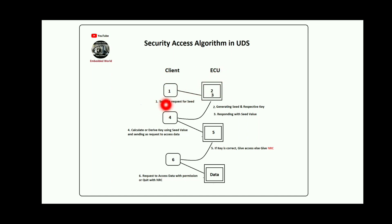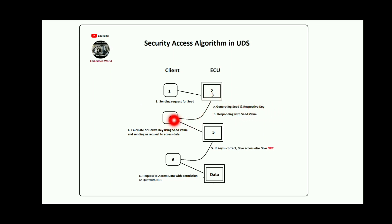The first step is the tester sending a request for the seed to the ECU. The ECU will generate the seed and also generate the respective key internally, but the ECU will only transmit the seed to the tester. The tester then has to derive or calculate the same key and send it back to the ECU.